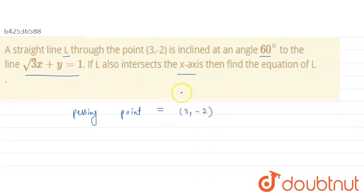Now, we know that the L line makes an angle of 60 degrees with this line.